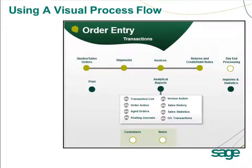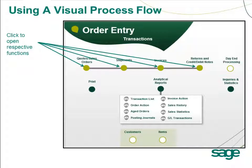Let's have a look at an existing Visual Process Flow — specifically, Order Entry. This is a screenshot of what you'll see when using the OE Visual Process Flow. These light green circles, when clicked on, will cause the appropriate Sage 300 ERP interface to appear. By default, we have the Quotes and Sales Orders icons, Shipments, Invoices, as well as the Returns and Debit and Credit Note interfaces.